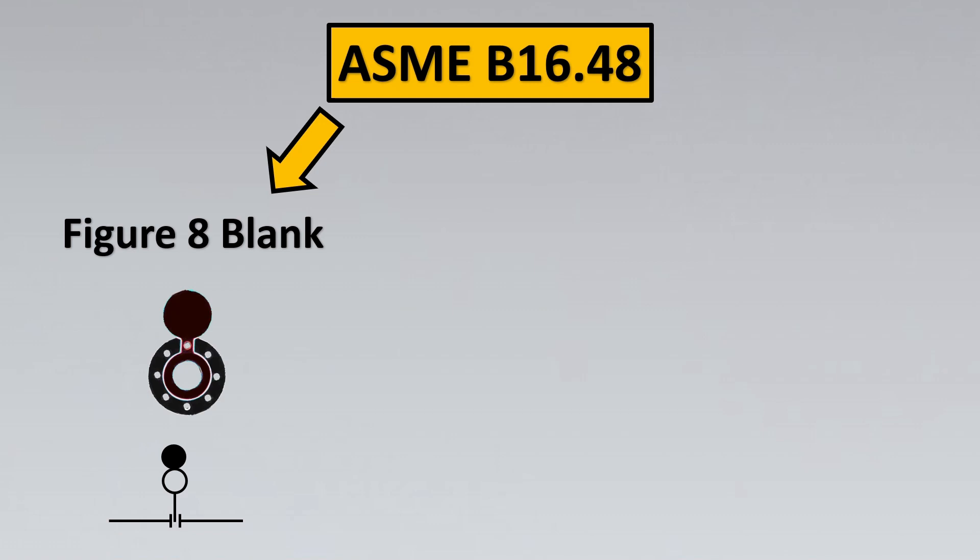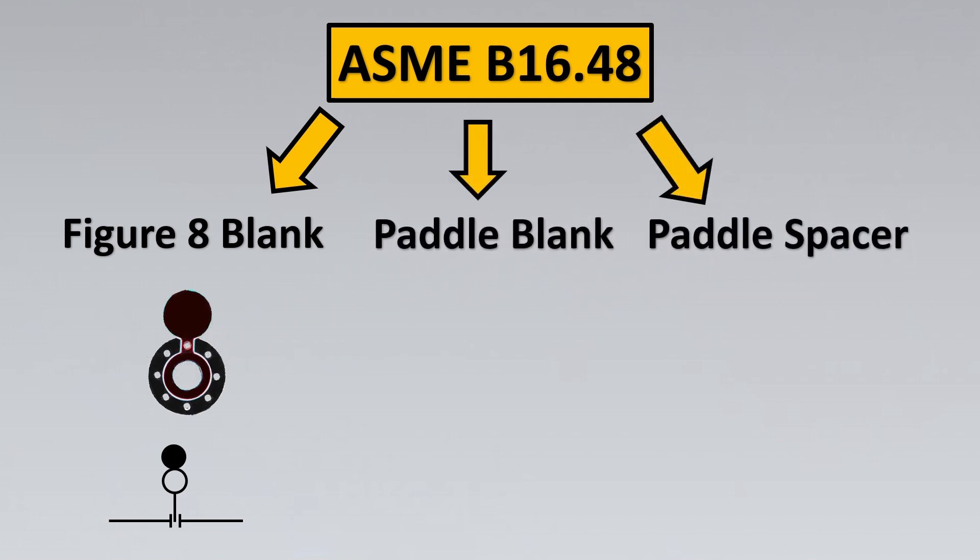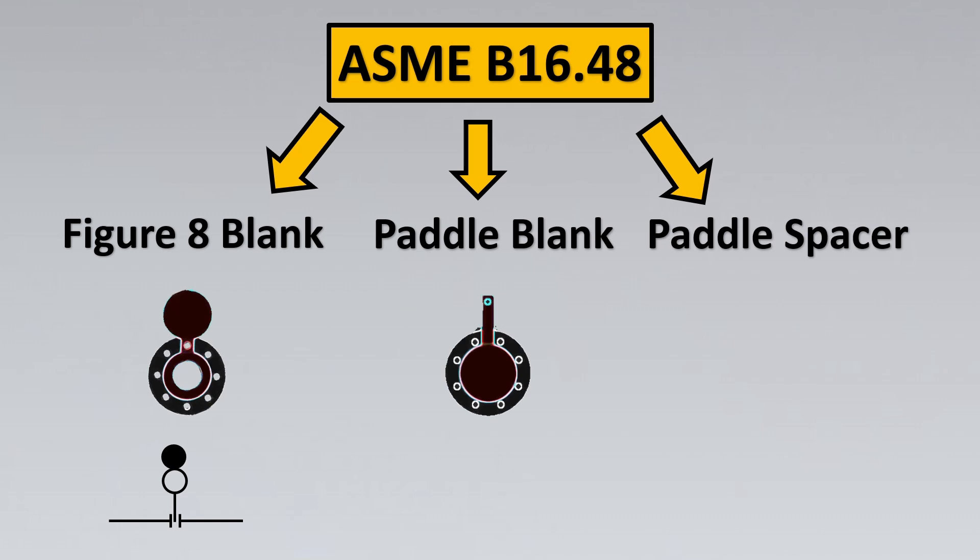In ASME B16.48, we saw what is a figure 8 blank, right, and the P&ID symbol as well. Now the other two are very similar to it. A paddle blank is nothing but the zero state of a figure 8 blank. So similarly, can you guess the P&ID symbol what it would be? Yes, it would be only the solid part of the circle because once you put this in a pipe, this means there will be no flow allowed for it.